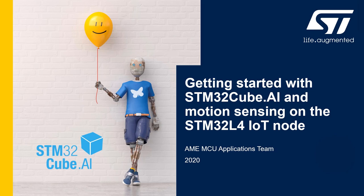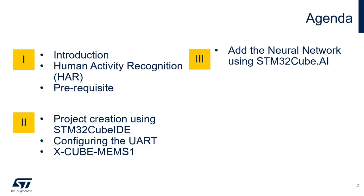Hello and welcome to this series of getting started with STM32Cube.ai and motion sensing on STM32L4 IoT node. The video application note series is divided in three sections. In the first section we will go through an introduction of STM32Cube.ai, the human activity recognition, and the prerequisites. In the second section we will create the project using STM32Cube.ai and configure the peripherals needed to acquire the sensor. In the last section we will add the neural network to process the accelerometer data and obtain human activity recognition using STM32Cube.ai.